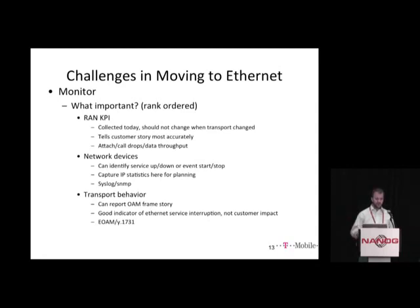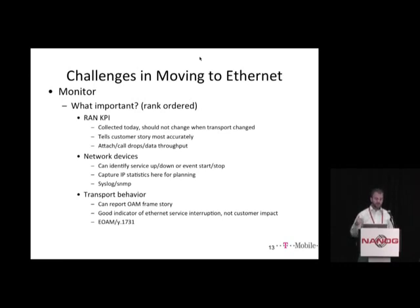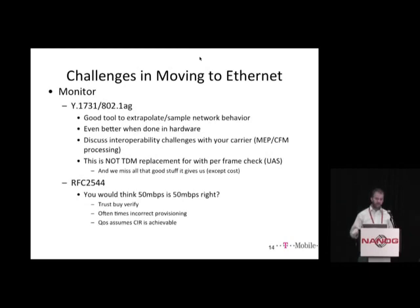Monitor what's important in the RAN KPIs — the RAN is gospel. The IP may have an event and the RAN may not even blip, or vice versa. Trust the RAN first and foremost. Second is the network devices — routers, BFD, protocols, pseudowire services — which give you an idea of service transitions. Then the transport behavior: different services react differently to network characteristics. It's important to monitor and understand it, but it doesn't always mean it's an actionable event.